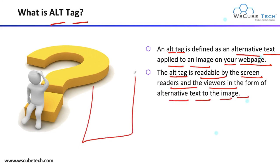Let's suppose this is your webpage. When you open this particular webpage, if due to some issue your image is not visible, in that case your alternative text is visible here. We can understand that this particular image belongs to this particular text. So this is your alt tag.